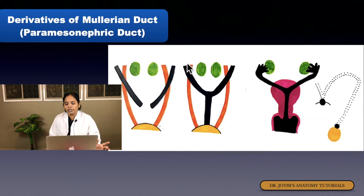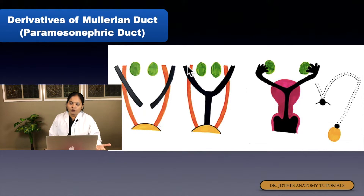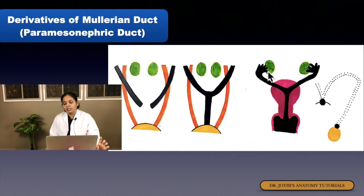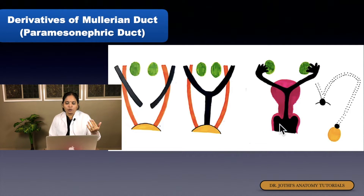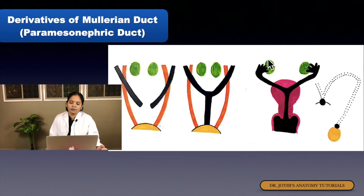Once the fallopian tube forms, the upper cephalic opening — a funnel-shaped opening — opens into the body cavity and forms the pelvic ostium of the fallopian tube. The fimbriated end of the uterine tube forms from the pelvic ostium. After formation, the fallopian tube initially lies in the lumbar region. Due to the descent of the ovary, the mesonephric duct in the female disappears. With the descent of the ovary, the fallopian tube occupies its original horizontal position.